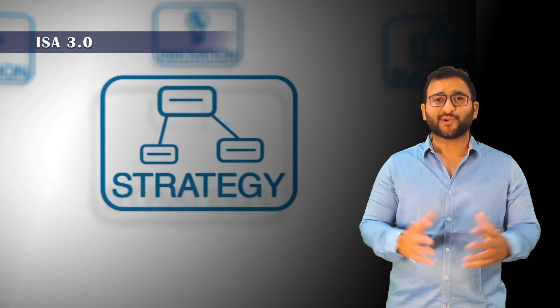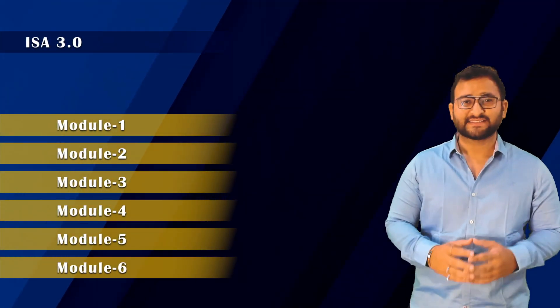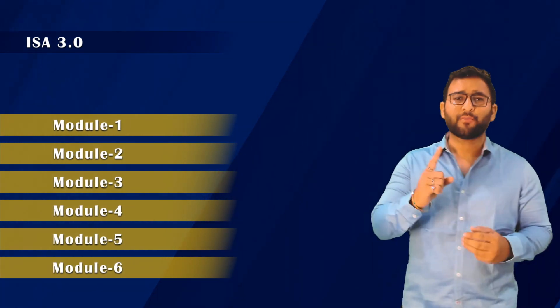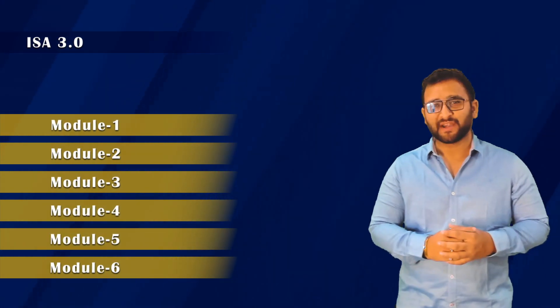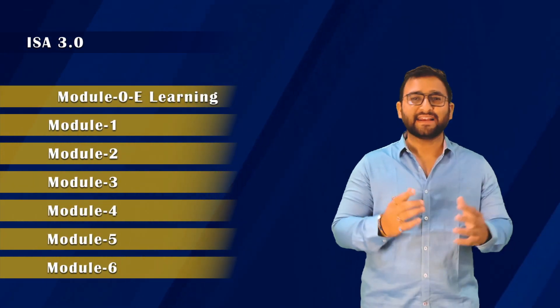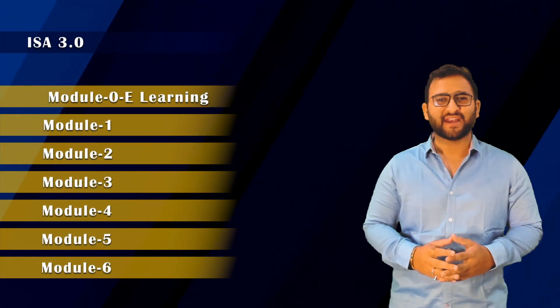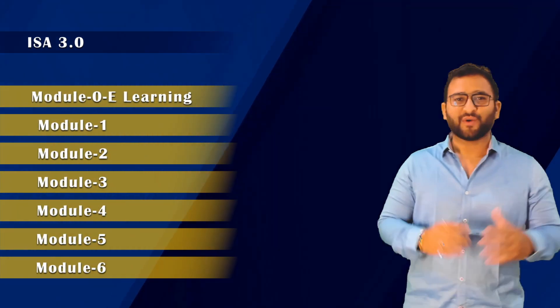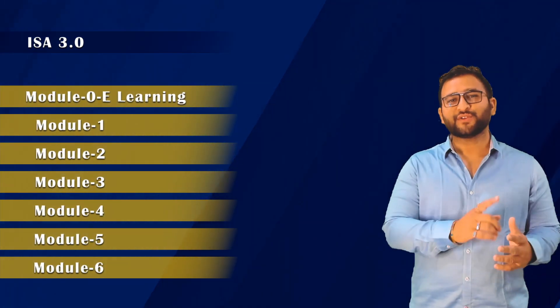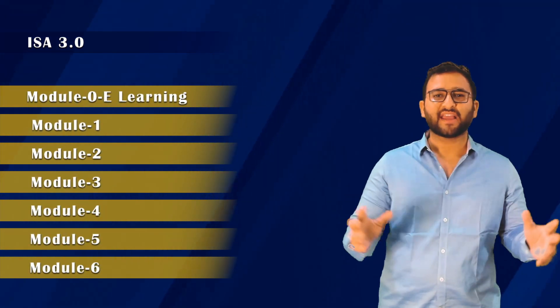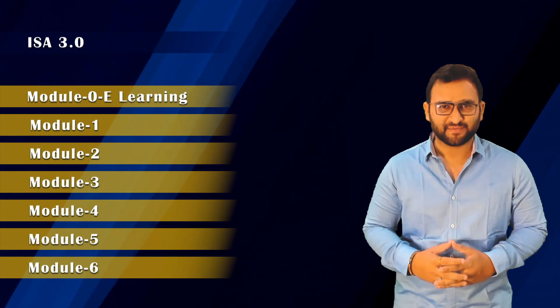In total, you have 6 modules. Among these 6 modules, one module requires extra payment, which is E-learning. E-learning is known as Module 0. So in all, with Module 0 and Module 6, you have a total of 7 modules.